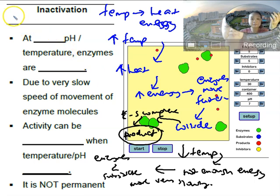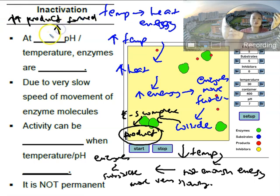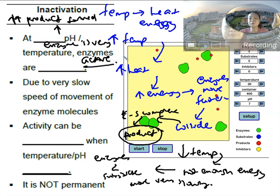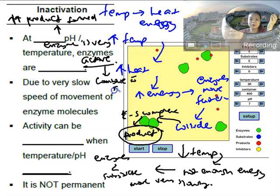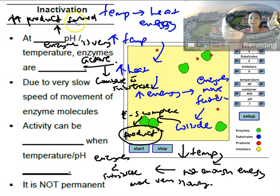If there are a lot of products formed, it's because your enzyme is very active. The meaning of active means that the enzyme is able to combine with a lot of substrate. The activity of the enzyme means it can combine with substrate — if it combines with substrate more, it's more active and you have more product. If it combines with substrate less, it's less active and produces less product.